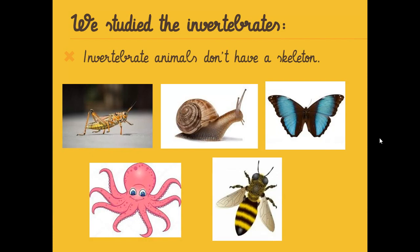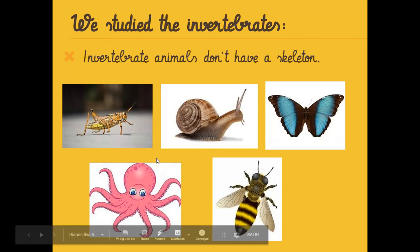We also studied the invertebrates. Invertebrate animals don't have a skeleton — they don't have a backbone and they don't have bones. For example, a grasshopper, a snail, a butterfly, an octopus, and a bee.